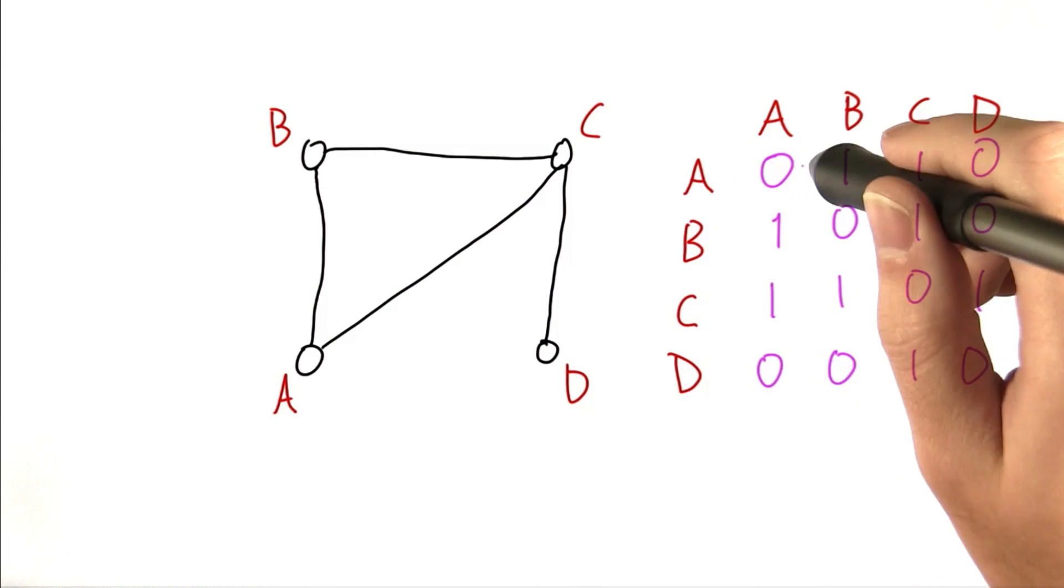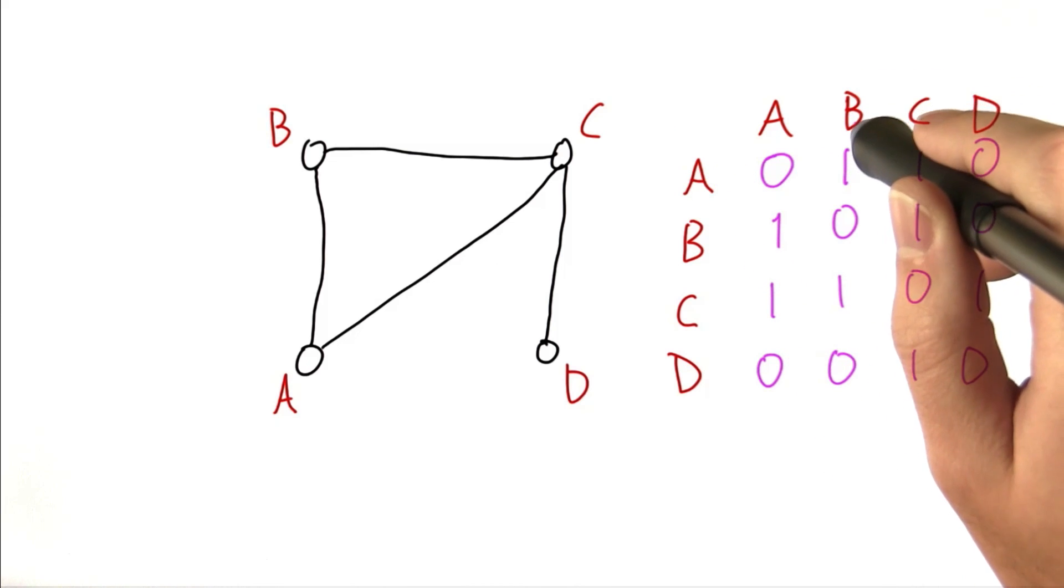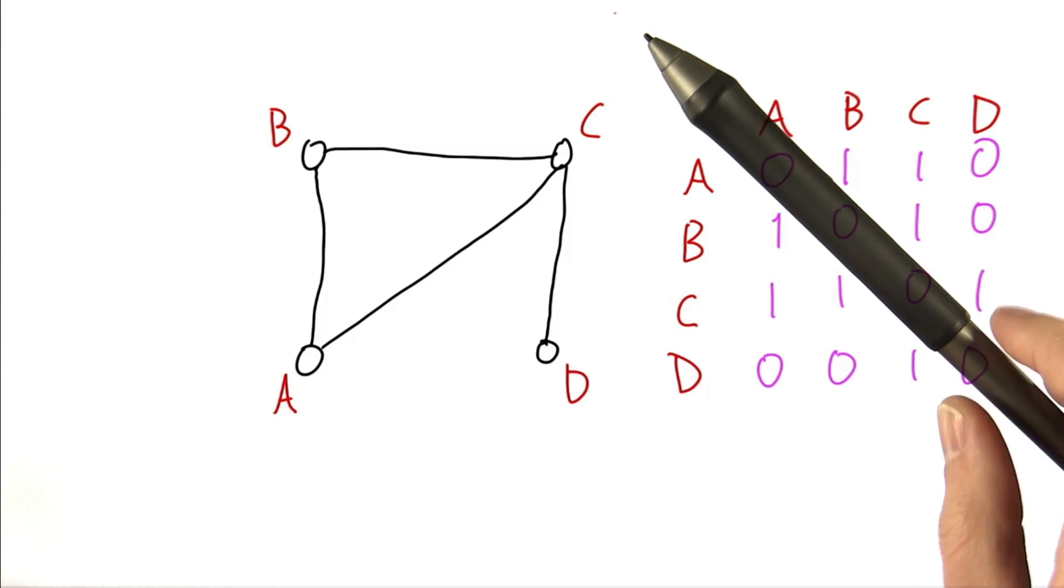And you put a 1 everywhere where the row vertex is connected to the column vertex. And so you see that the matrix is symmetric. That is, it's mirrored right about the diagonal here.